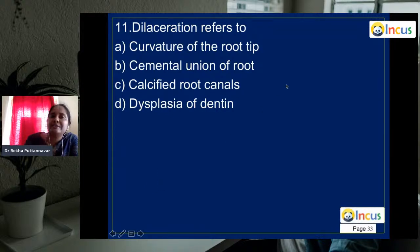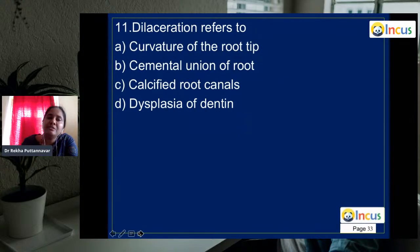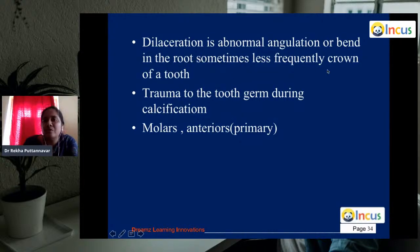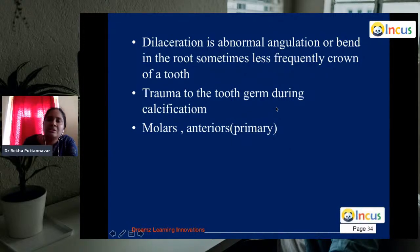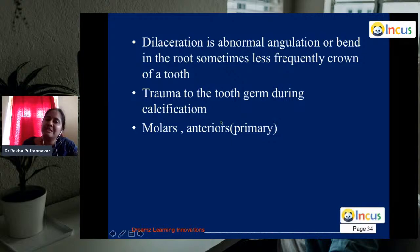Question 11: dilaceration means the curving of the root tip. It can also involve cemental union of root, calcified root canals, or dysplasia of dentin. Dilaceration mainly affects the root but occasionally the crown is also involved. The main cause is trauma to the tooth germ during calcification. The most commonly affected teeth are molars, but anteriors are detected earlier due to aesthetic concerns.